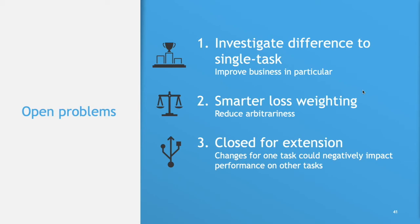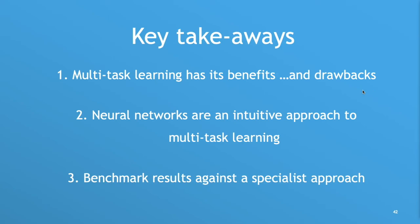Key takeaways: if you ever find yourself needing to predict multiple things at the same time, consider multitask learning. It has drawbacks — performance gain is not guaranteed, and there are many things to consider. But benefits include consistent outputs, easier maintenance, and reduced training time. Consider neural networks if you want to try multitask learning, because it's very intuitive. And always benchmark your results against a single-task specialist approach, because as we've seen, performance gains are not always there, and you want to know how big the difference is to make a good decision.